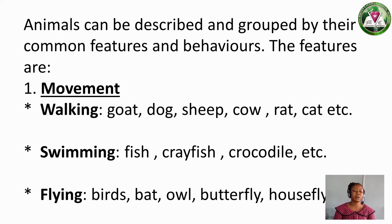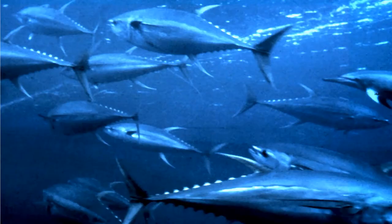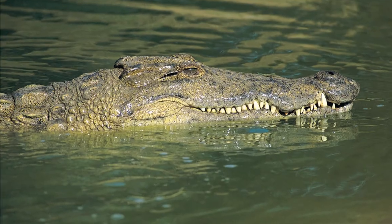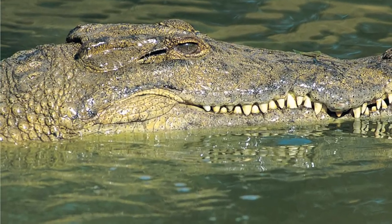The second movement type is Swimming. Let's know the animals that move by swimming. We have fish, crayfish, crocodile, and so on.